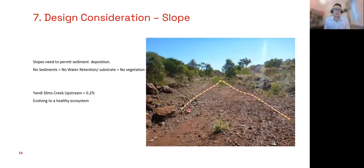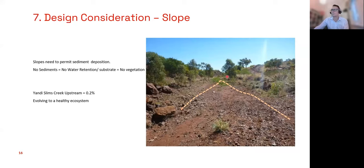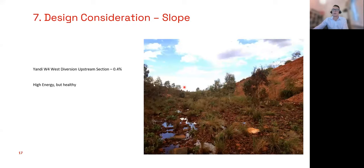The next design consideration is slope. You need to get the slope right to get sediment deposition to occur. If no sediment is depositing, there's no substrate for vegetation to get their roots into and no voids between the sediment for soil moisture retention. At Yandy mine, a section of Slim's Creek constructed at 0.2% slope shows a tongue of alluvial material depositing, with a lot of vegetation starting to build up — evolving into a nice healthy ecosystem. Another location at 0.4% also shows cobble material in a relatively high-energy system, but still enough for vegetation and trees to get a foothold.